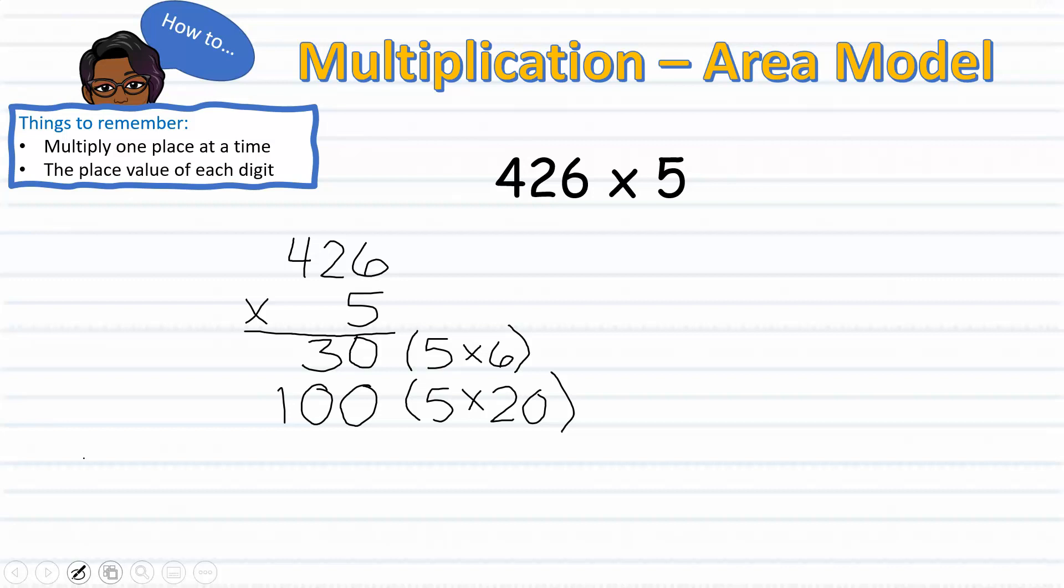Now we are ready to move on to the hundreds place. Since the 4 is in the hundreds place, we are actually multiplying 5 times 400, which gives us the product 2000. We are ready to add.